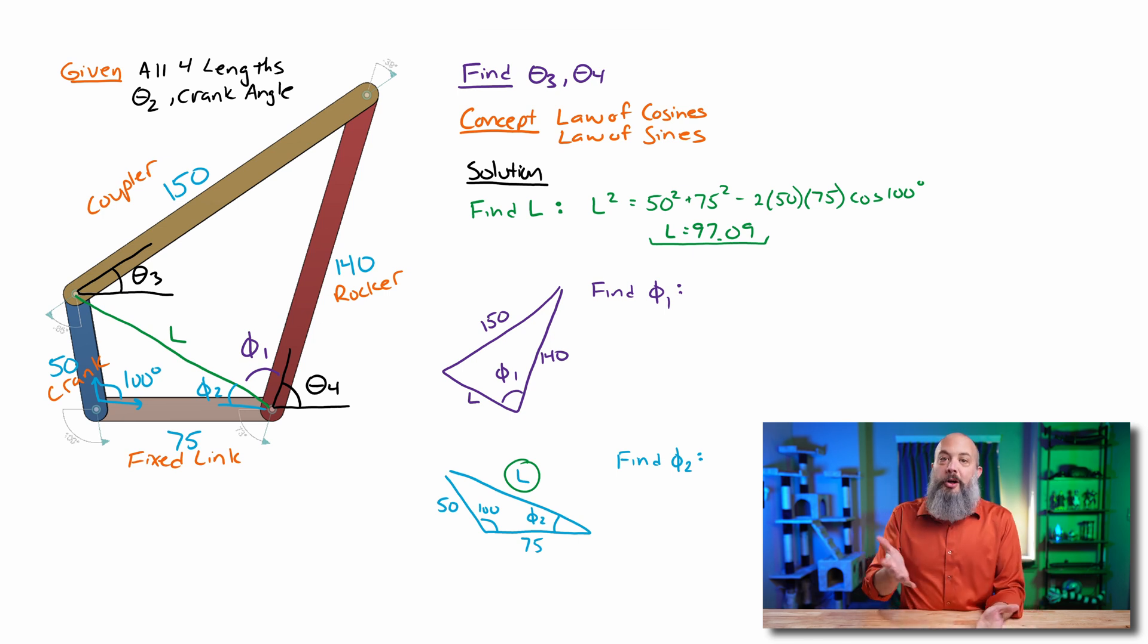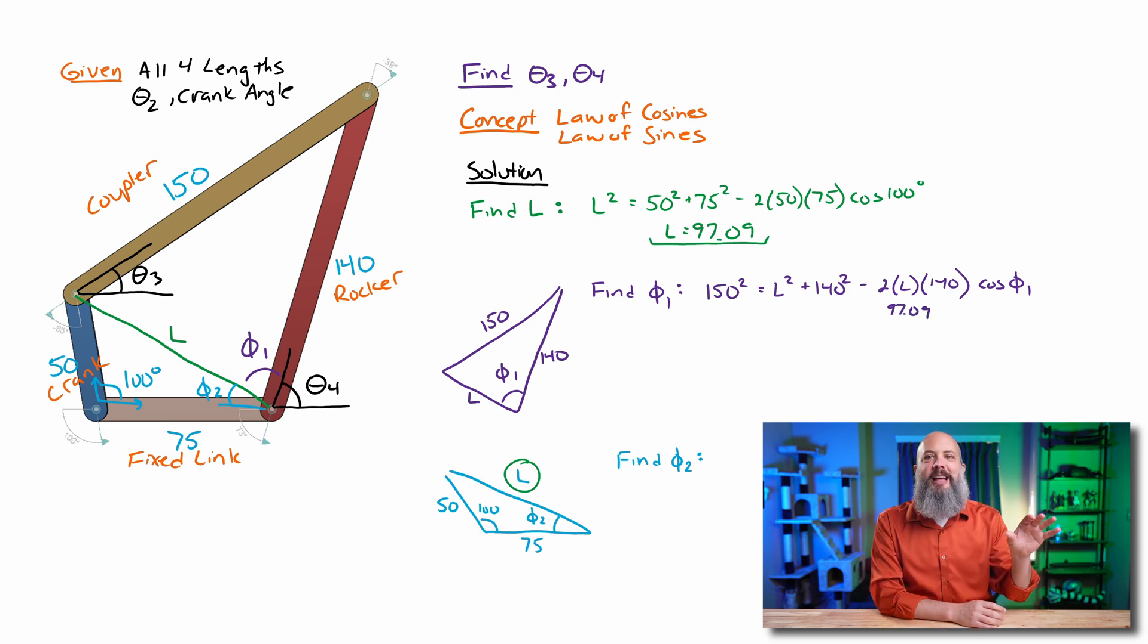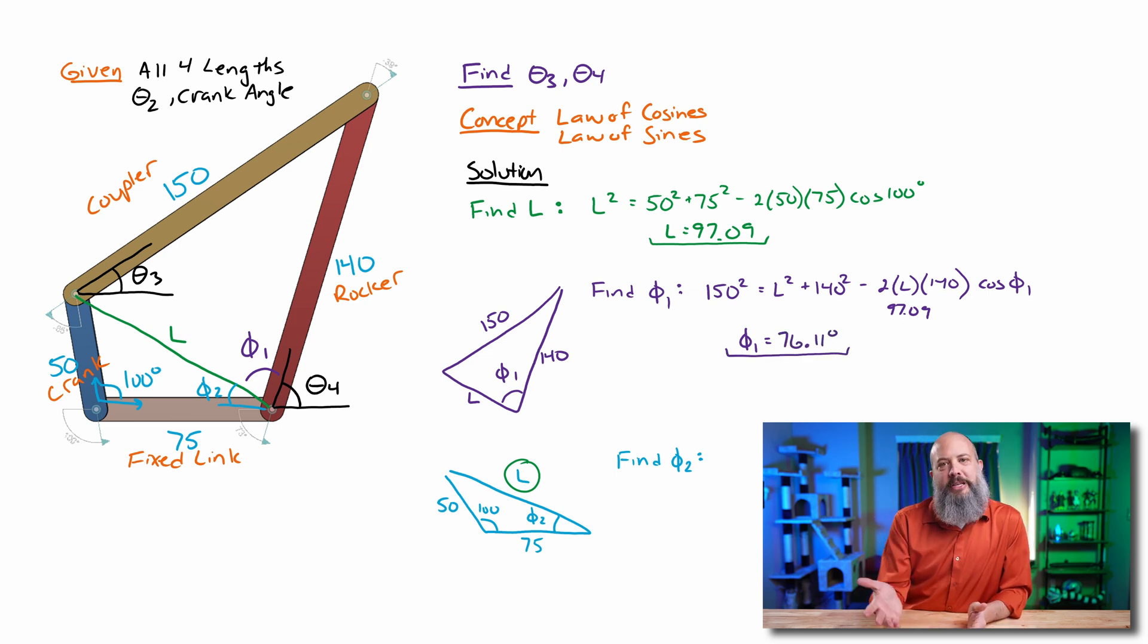Using my tall triangle, I now know all three sides, but I'm missing that angle still. So I can do law of cosines again, but this time the phi 1 is my unknown. So phi 1 is opposite of the 150. So the 150 is on its own side. L and 140 are on the side with cosine phi 1. Plug in the L is the 97 and get phi 1 76.11 degrees.